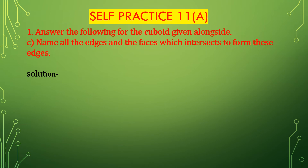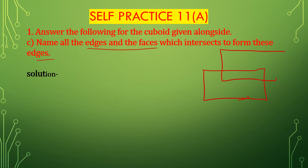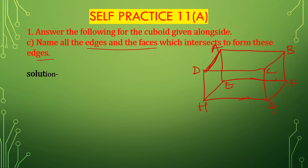Now third bit C. First draw the given cube. The question is: name all the edges and the faces which intersect to form these edges. This cube is given. Labeling vertices: A, B, C, D, E, F, G, H. Edges: A, B, B, C, C, D and A, D. These are the edges and the faces intersecting.